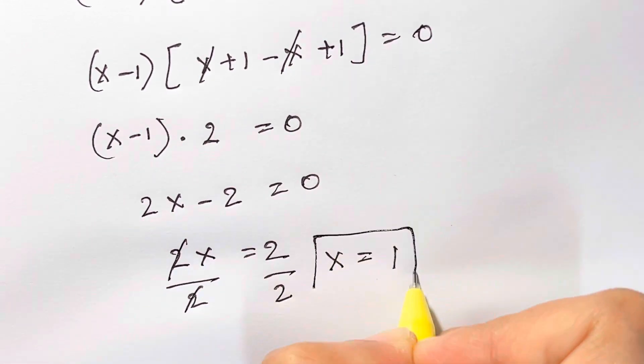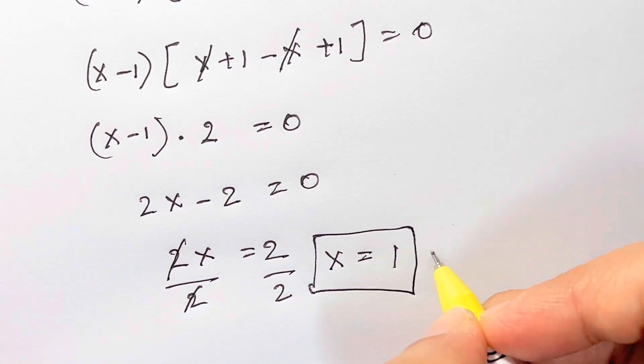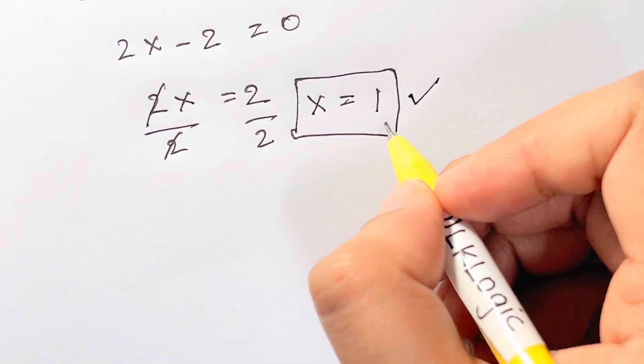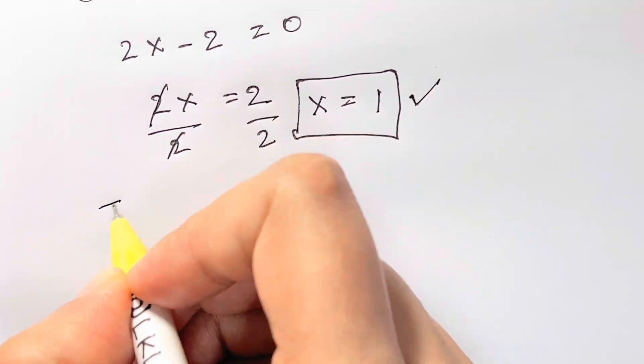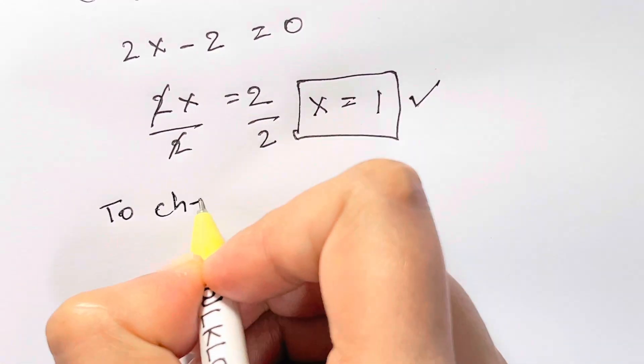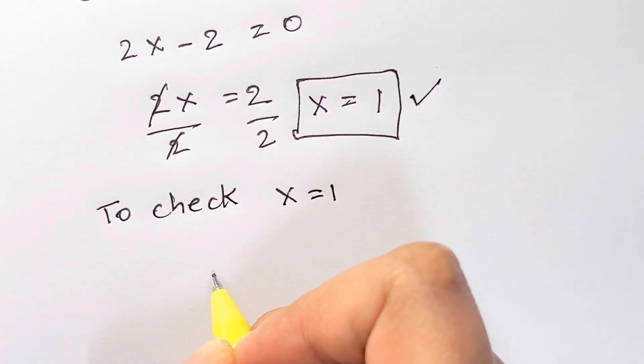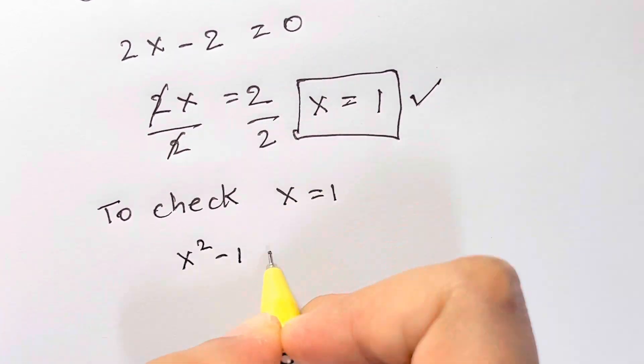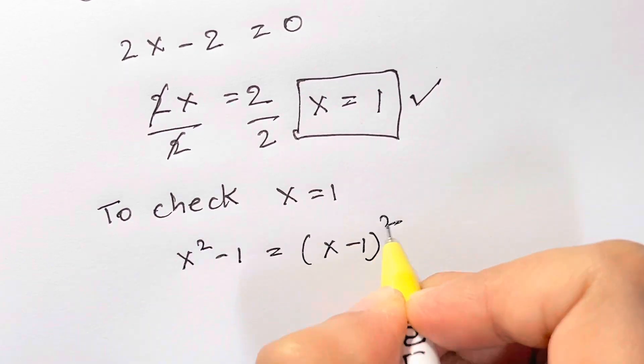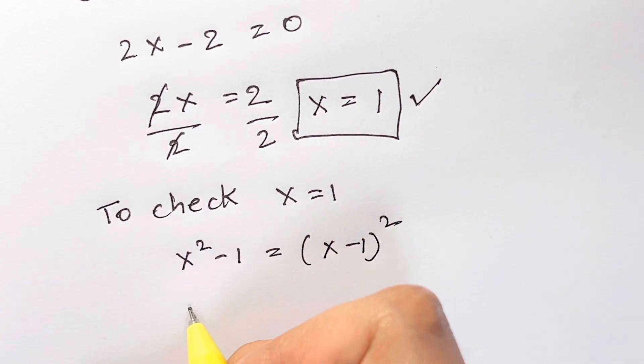Here you have got the value of x is equal to 1. So if you want to check that this value is right or not, let us substitute in this. To check, x is equal to 1: x squared minus 1 is equal to x minus 1 the whole squared. Let's substitute 1 back in this.